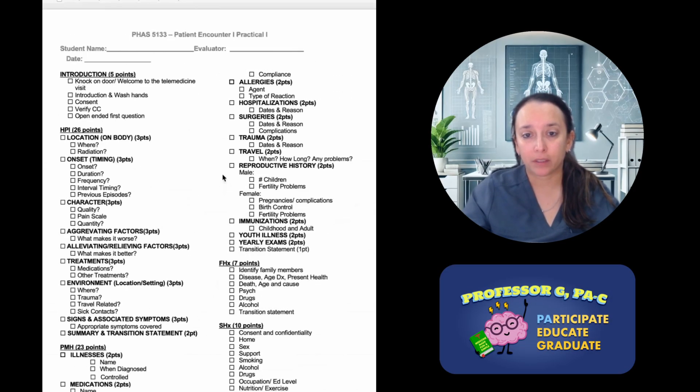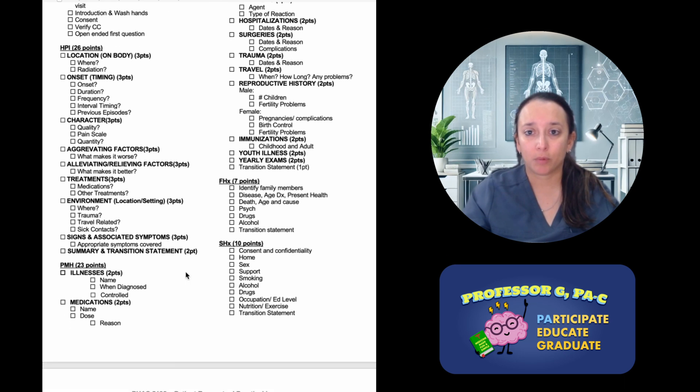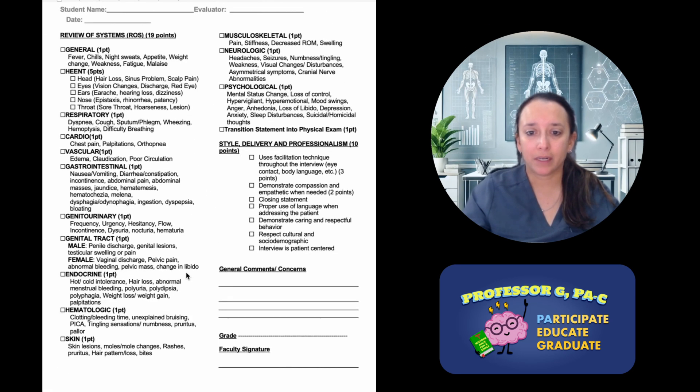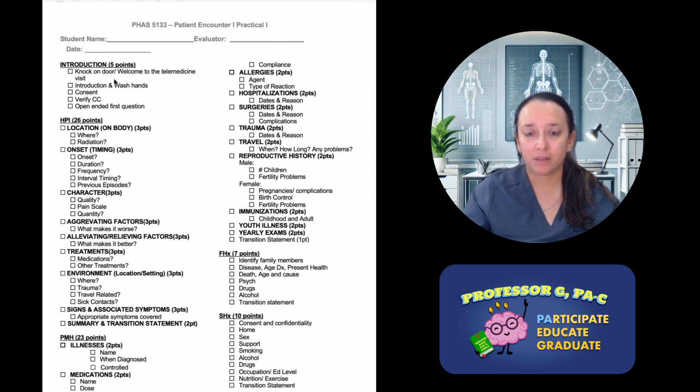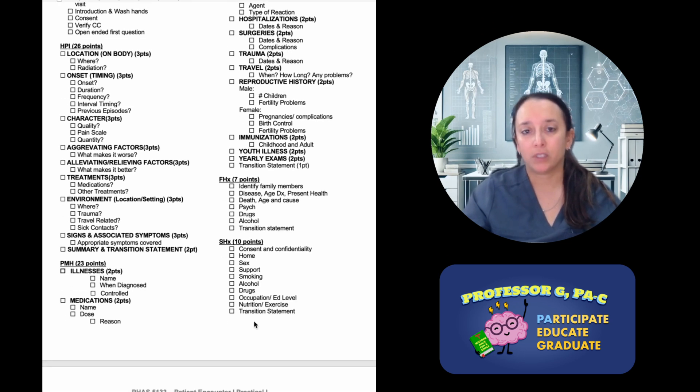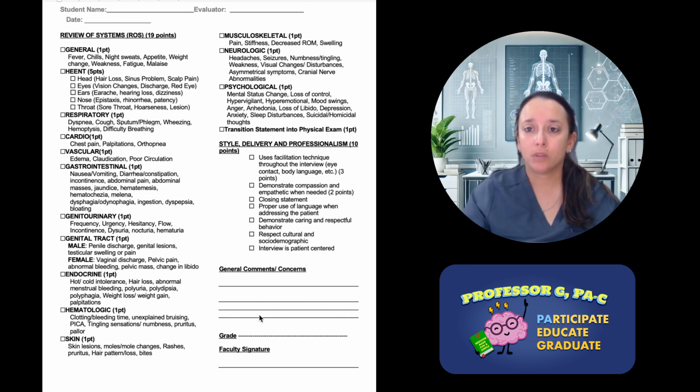This is your patient encounter practical rubric. You have access to this on your blackboard and you can see exactly what is expected of you for your first practical examination. I'm going to fast forward down here to the second page, which is the review of systems. As you notice, it's quite a bit of points - 19 points. The other areas are 26 points for the HPI, 23 points for the past medical history, so it is the third most valuable section. Make sure that you put some emphasis into that.